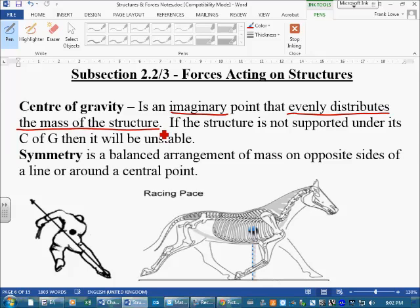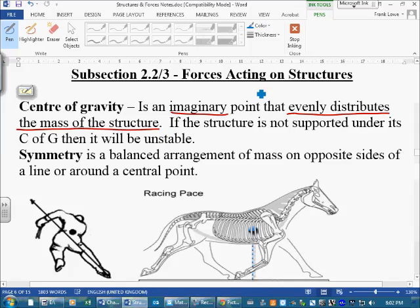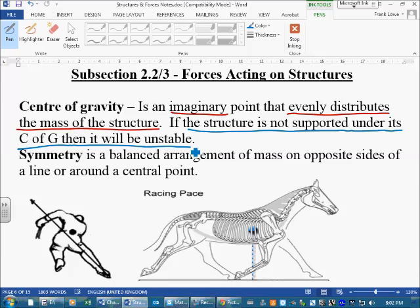Now this part is very important, and we make a big deal of it in class: if the structure is not supported under the center of gravity, then it will be unstable. What this means is that if there's no base or support directly underneath the center of mass, then that structure will be unstable.